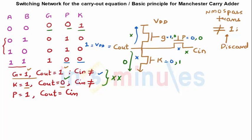And the last one: when propagate is one, that means my kill is zero and my generate is zero. See these two cases. That means this transistor is off, this transistor is off, only this transistor is on. And when this is on, this is a pass transistor, it will pass whatever is at its input to the output. So C out would be equal to C in.